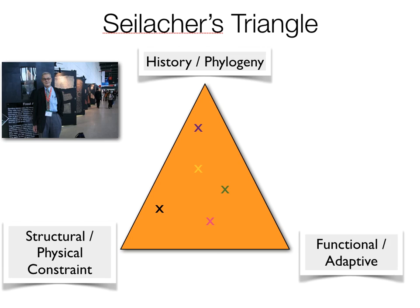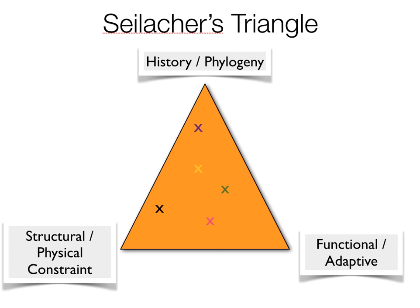A really useful way to think about how any individual form or structure in an organism evolved is Seilacher's triangle. There are three apices to Seilacher's triangle: history and phylogeny, functional adaptive, and structural and physical constraints.